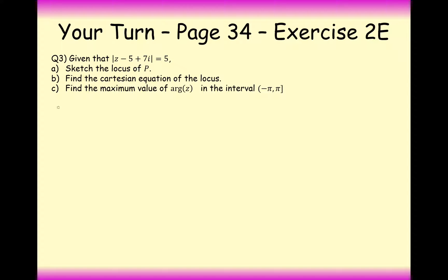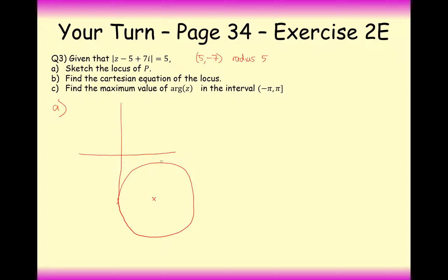Let's work through this one together. Draw a nice diagram: the centre of this circle is at (5, -7) with a radius of 5, which means it's going to touch one of the axes. It has a maximum height of minus 2, goes down to minus 12 at the bottom, comes out at 5 on the left, and to 10 at the maximum on the right. That's a good diagram to describe this locus.